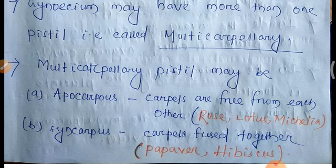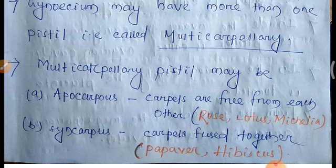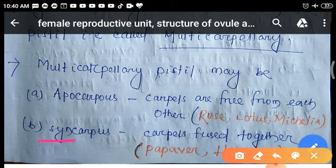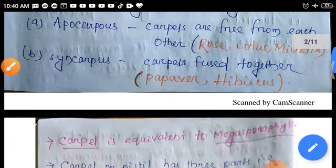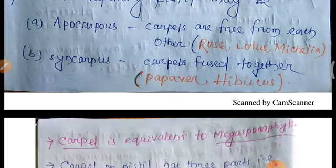In apocarpus, the carpels are free from each other and not fused together. Examples of apocarpus plants are rose, lotus, and Michelia. In syncarpus, the carpels are fused with each other. Examples of syncarpus plants are Papaver (poppy), papaya, and hibiscus.